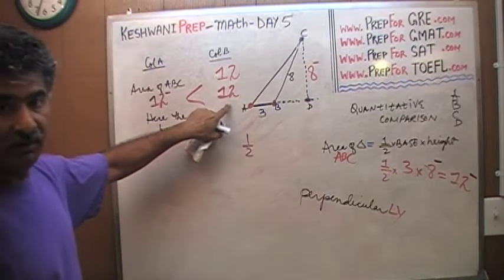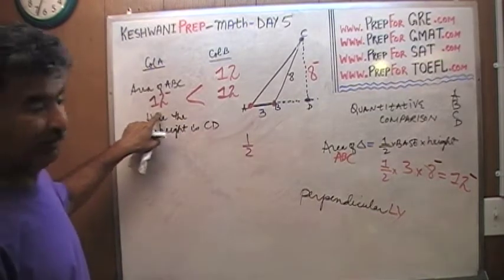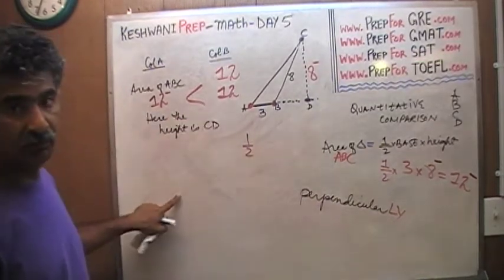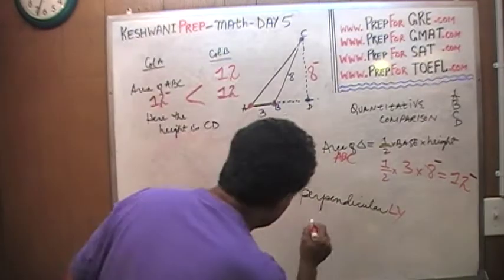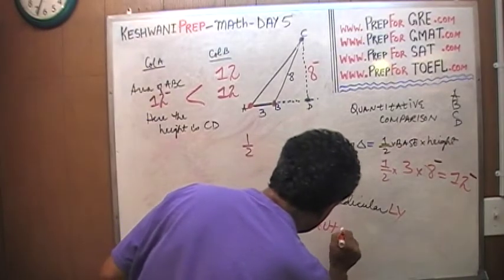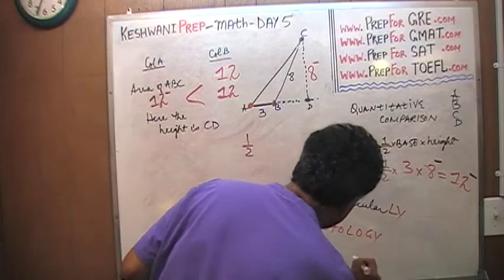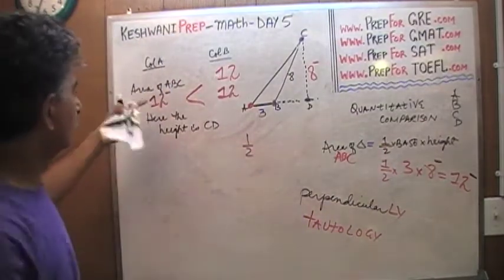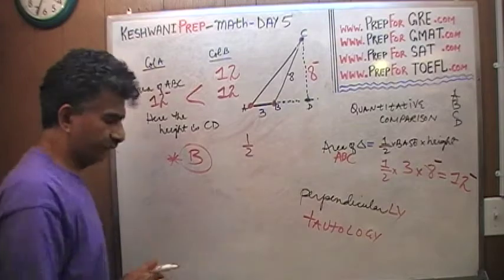I was about to say something less than 12 has got to be less than 12, but that sounds tautological. There you go. Therefore, the answer is B. That was the correct answer.